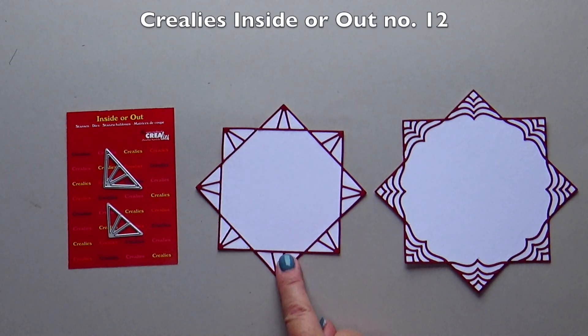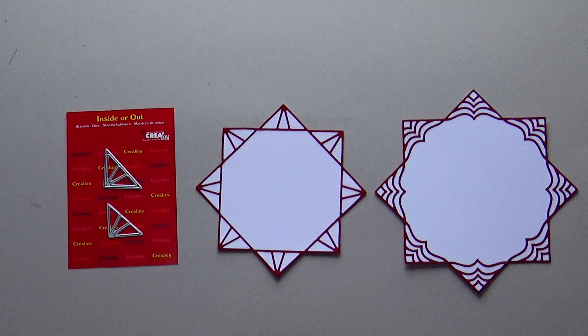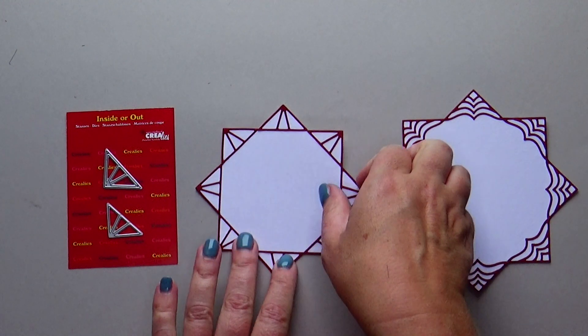Now choose another inside or out die, for example number 12. Die cut the outside die 8 times out of colored cardstock with Crealies make a sticker out of your die-cut shape behind it. Put these corners on the other 8-pointed star.